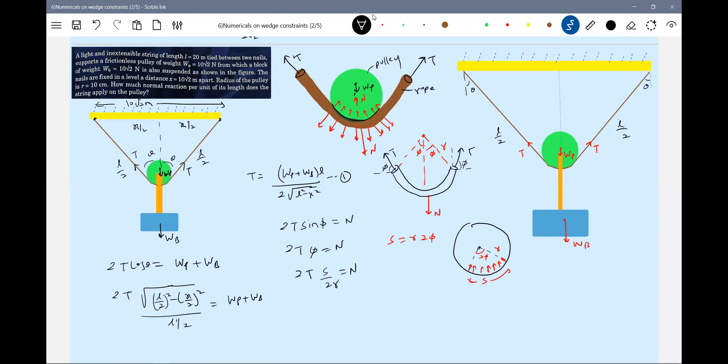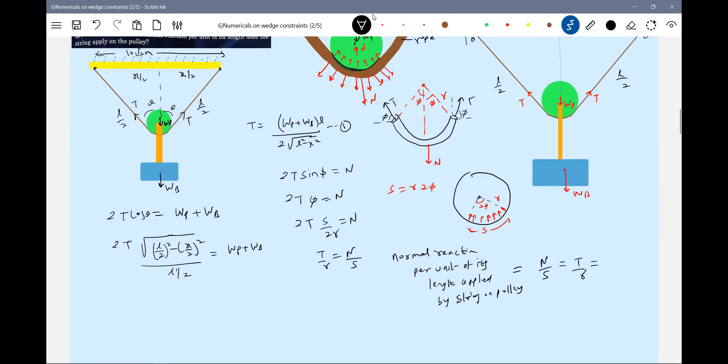How much normal reaction per unit of its length does the string apply on the pulley? What I should find is N by S. This N by S is what is being asked. Do we know T? The value of T is there, so I'm going to substitute.